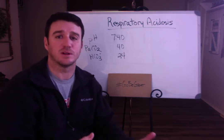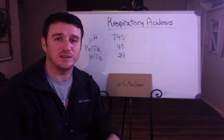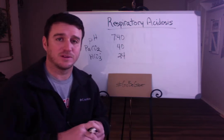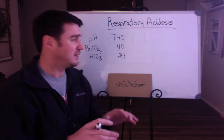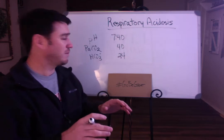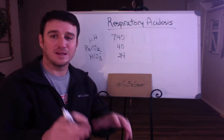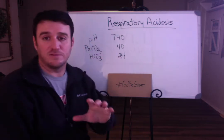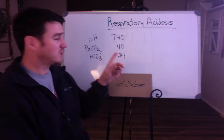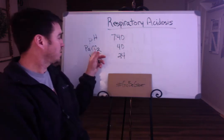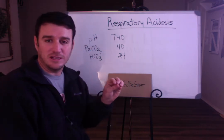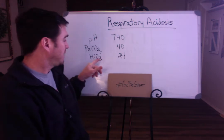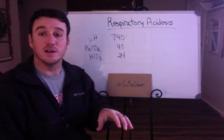So how do you interpret a blood gas? When we're talking about arterial blood gases, we're really talking about three main factors: the pH of the arterial blood, the partial pressure of CO2 in the arterial blood, and the bicarb in arterial blood.